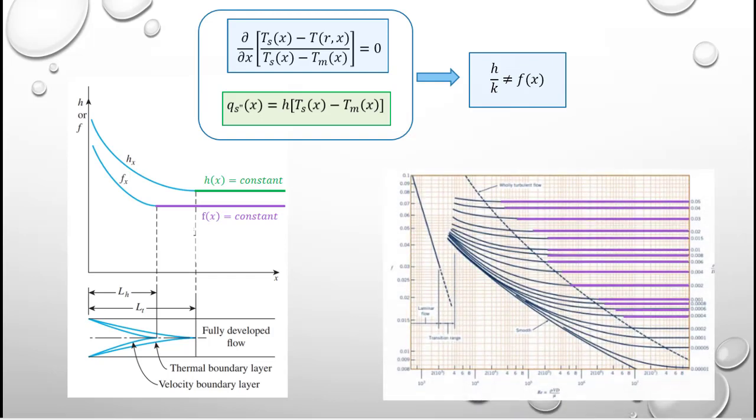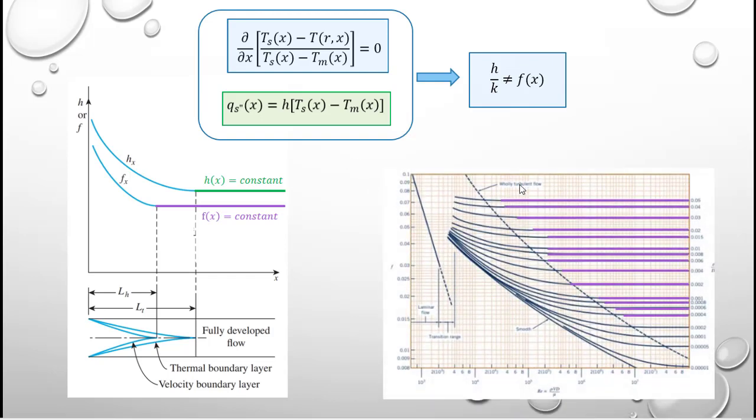Just as a reminder, last semester when we introduced the Moody diagram we did see that for all cases where the flow became wholly turbulent, the friction factor became a constant. So it should not be surprising to find that the heat transfer coefficient, which is the corollary of the friction factor for the thermal boundary layer, is also a constant once the flow becomes fully established.